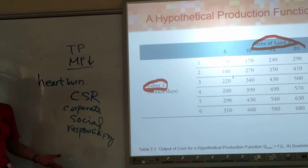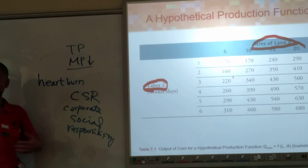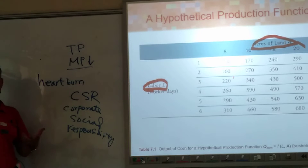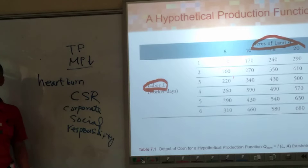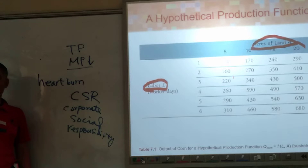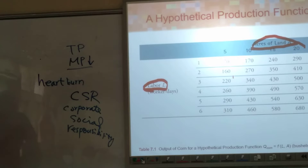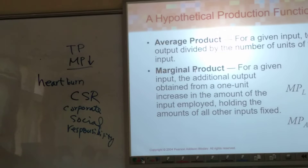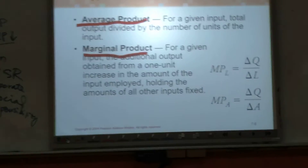Why is it called heartburn? It's actually related to your stomach — it's close to your heart. The acid turns up. Anyway, you have average product and marginal product. Let me draw a diagram for you.